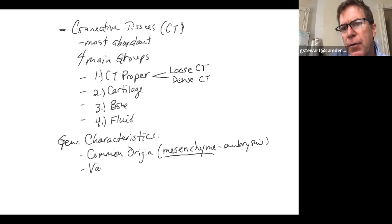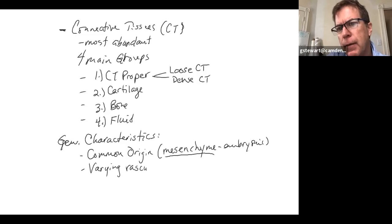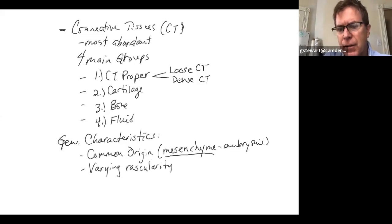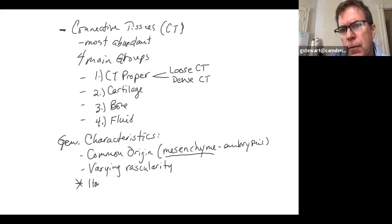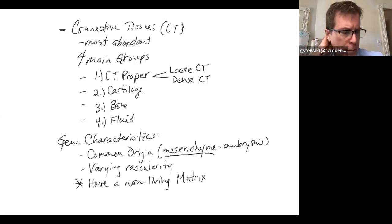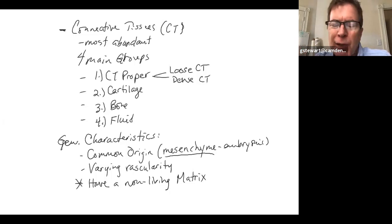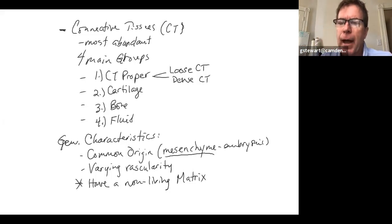Second, there's quite a varying degree of vascularity — blood supply. Some connective tissues are highly vascular with a rich blood supply; others are practically avascular. And finally — I'm going to put a star next to this — all connective tissues have something called a non-living matrix. That's what classifies connective tissues as connective tissues. Blood has a non-living matrix, which is why it's a connective tissue.